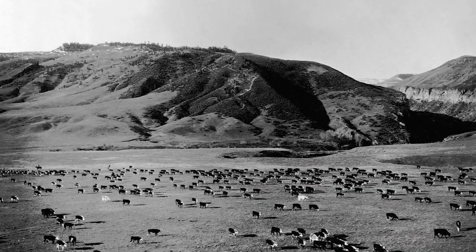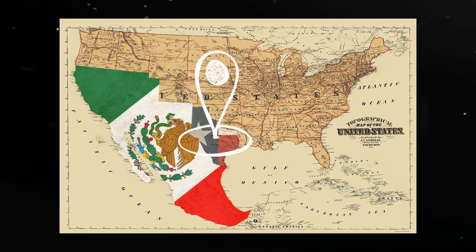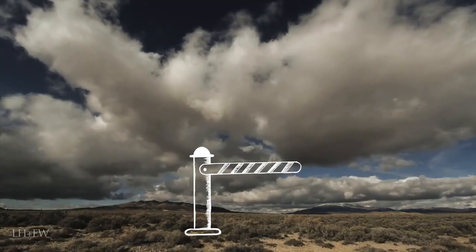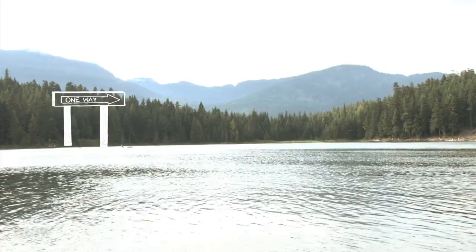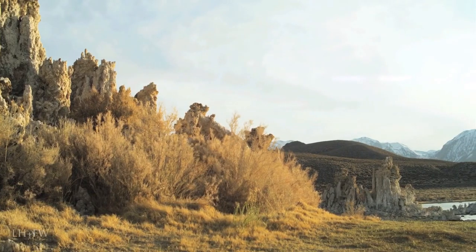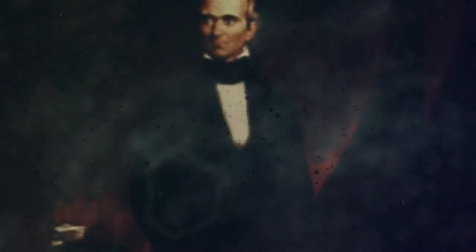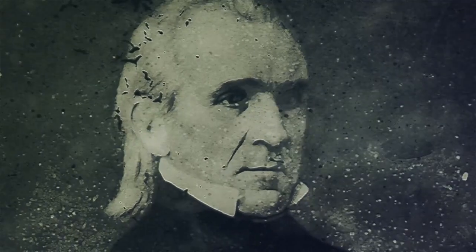The primary cause of the war was the dispute over the border between Texas and Mexico. The United States claimed the Rio Grande as the border, while Mexico argued that it was the Nueces River further north. Attempts by President Polk to purchase the disputed land from Mexico were unsuccessful.